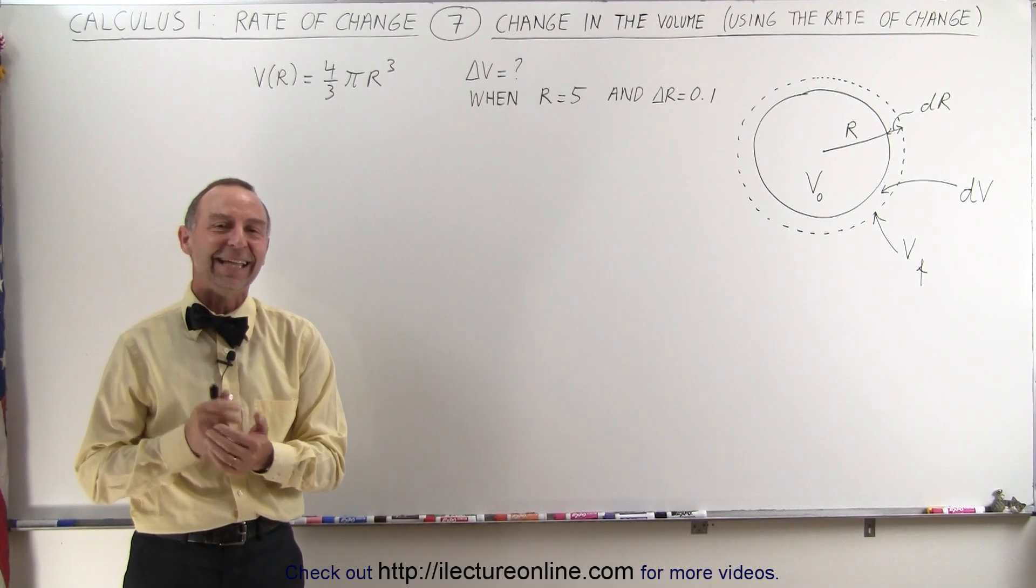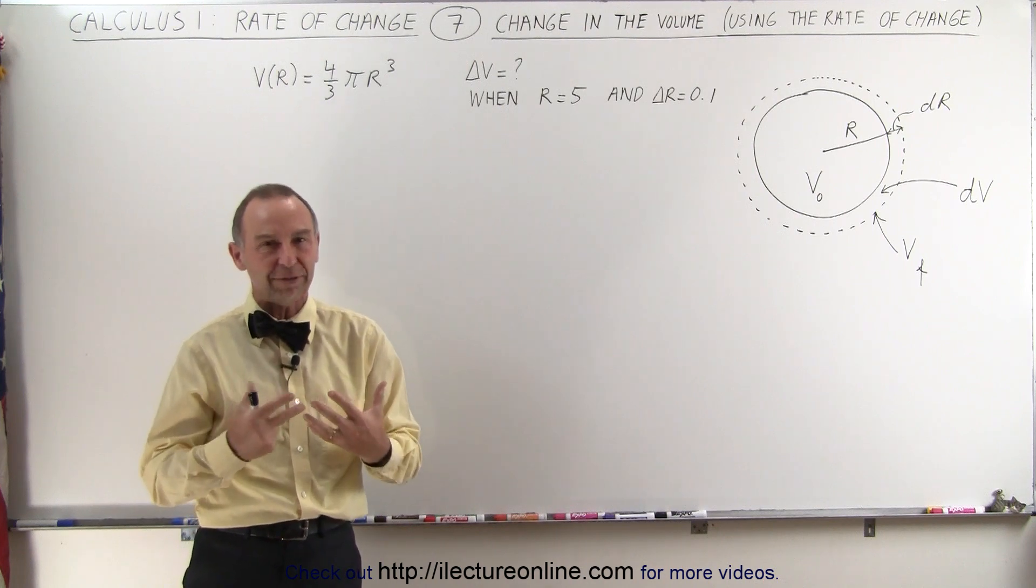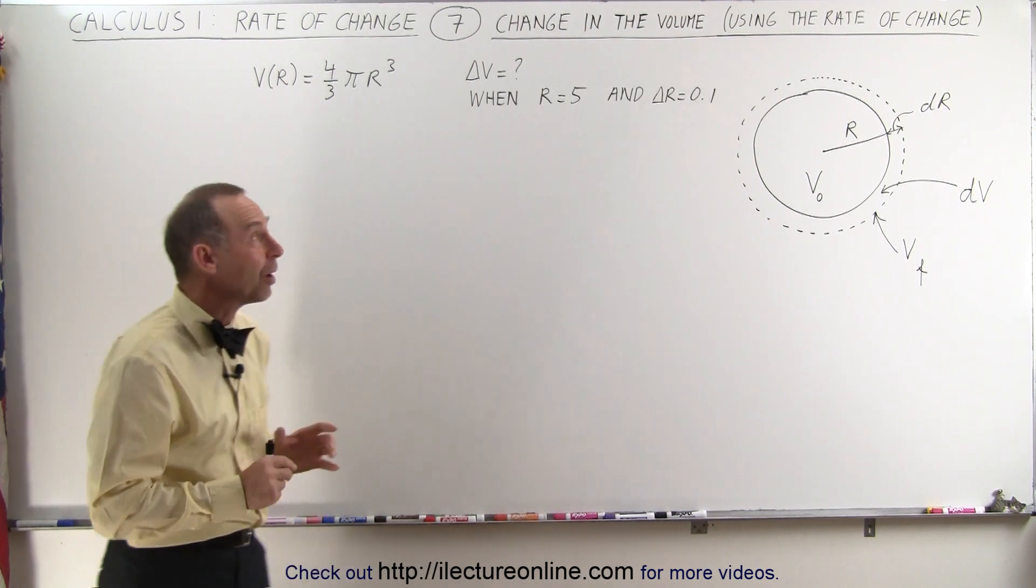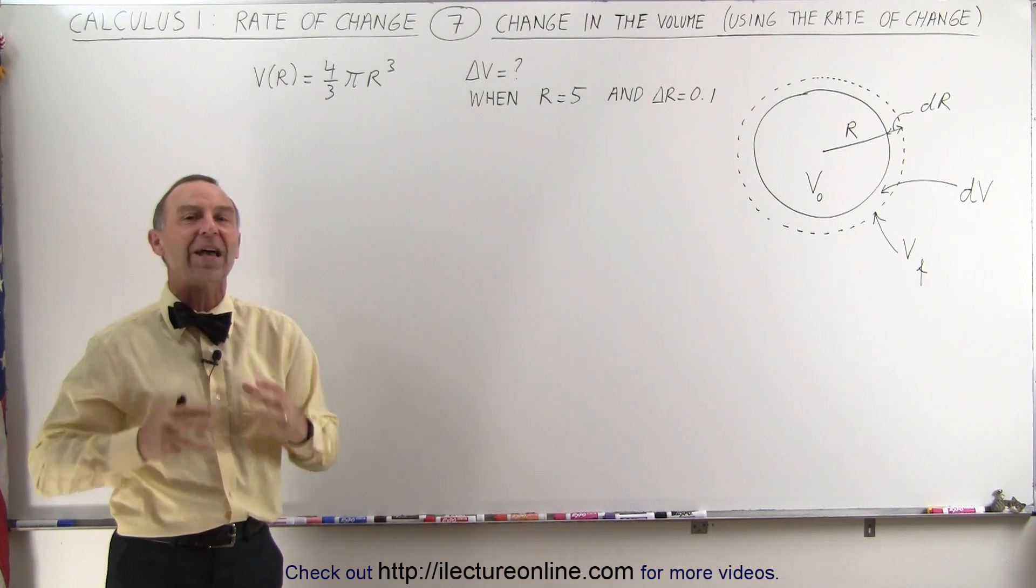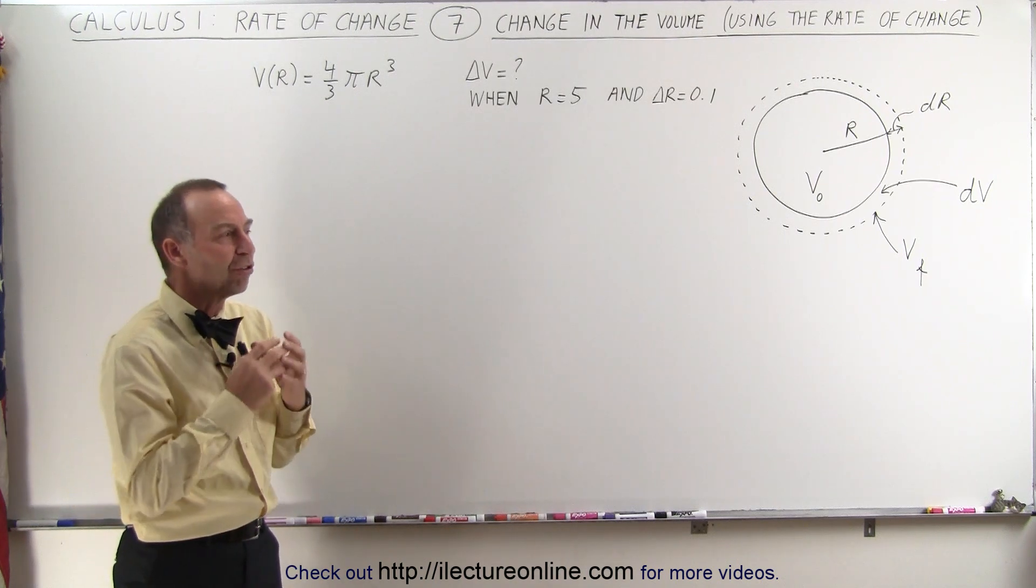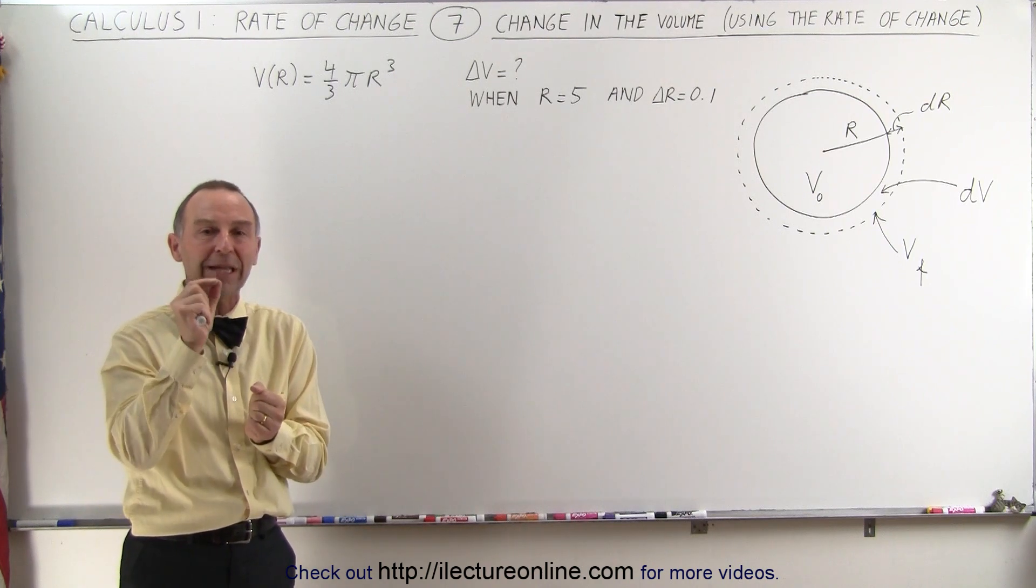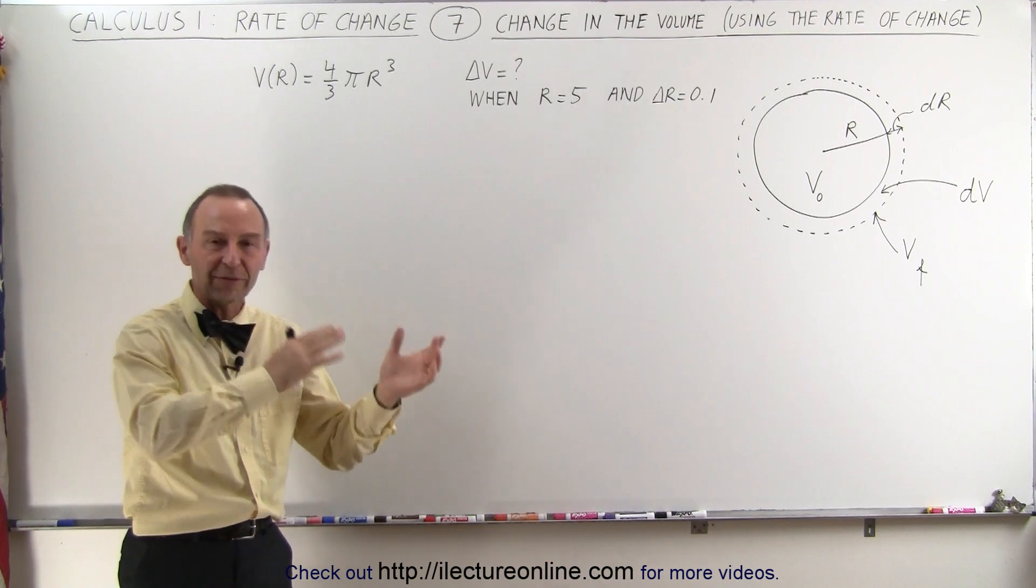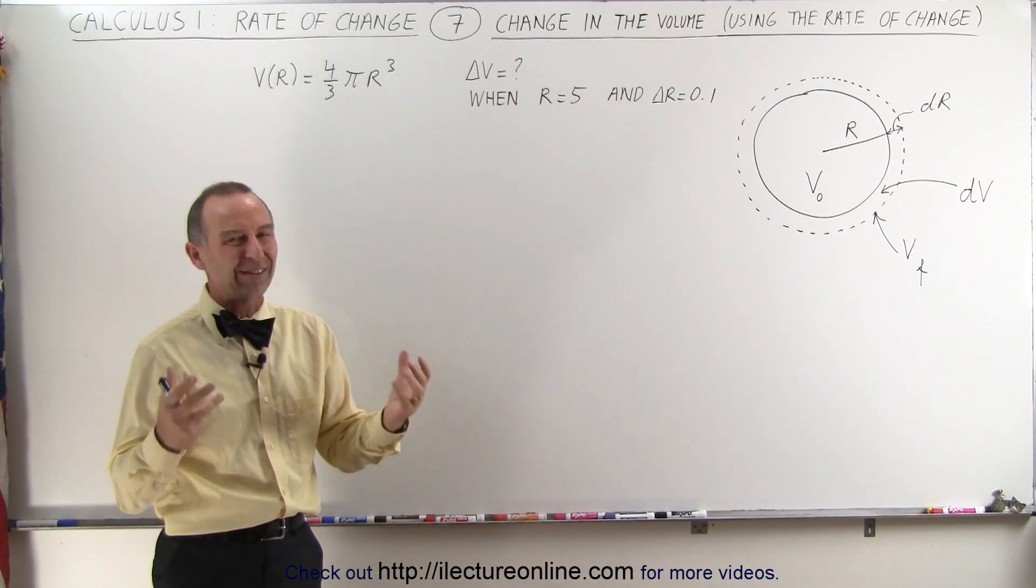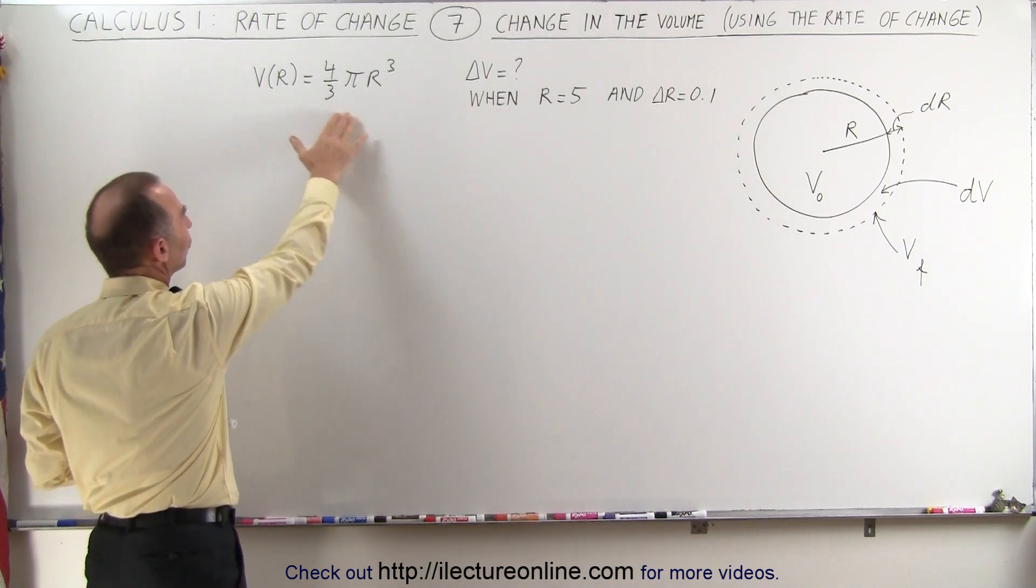Welcome to ElectronLine. In this video we're going to work with the rate of change or the derivative of something, in this case the volume of a ball, and relate that to how much the volume is actually changing. The change in the volume when the radius is a certain value and when the radius changes by a small amount. So we're going to relate the derivative to differentials and see what the difference is. Here we have the volume written as a function of r.